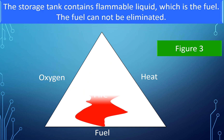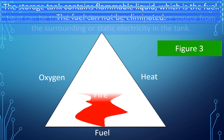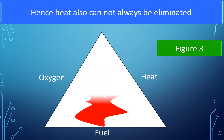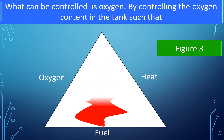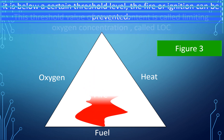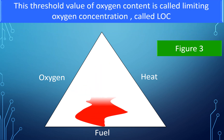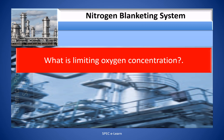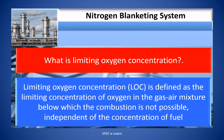The storage tank contains flammable liquid, which is a fuel — and the fuel cannot be eliminated. Heat can be transferred from a high-temperature source in the surroundings or from static electricity in the tank, and hence heat also cannot always be eliminated. What can be controlled is oxygen. By controlling the oxygen content in the tank such that it is below a certain threshold level, fire or ignition can be prevented. This threshold value of oxygen content is called the Limiting Oxygen Concentration, or LOC. LOC is defined as the limiting concentration of oxygen in the gas-air mixture below which combustion is not possible, independent of the concentration of the fuel.